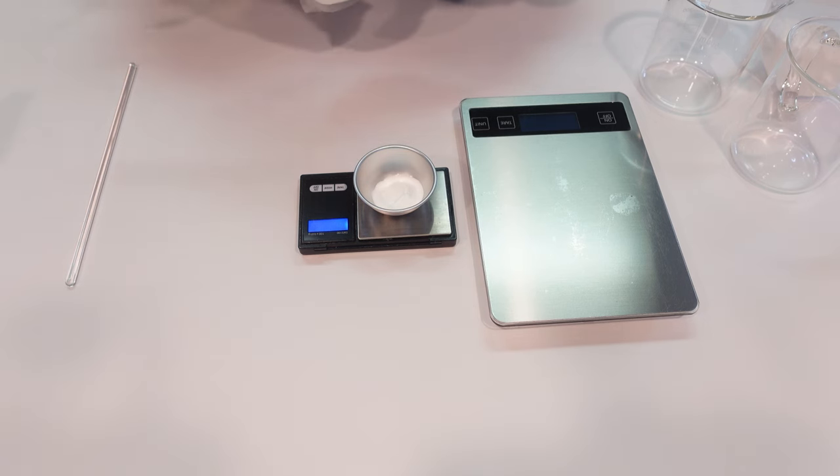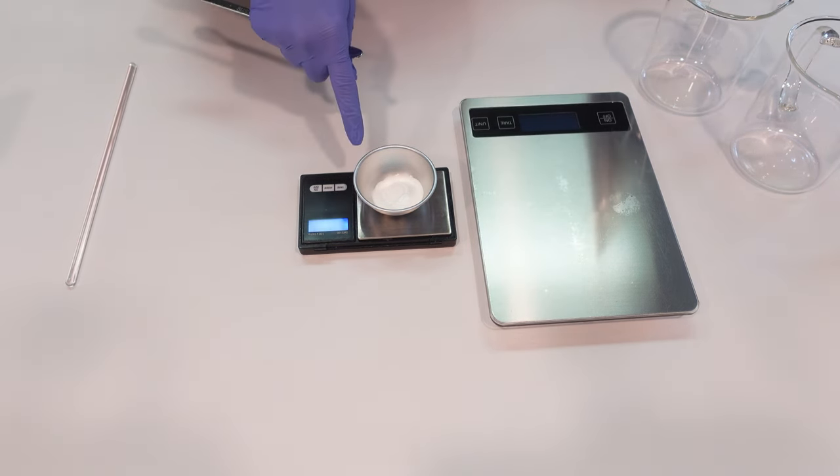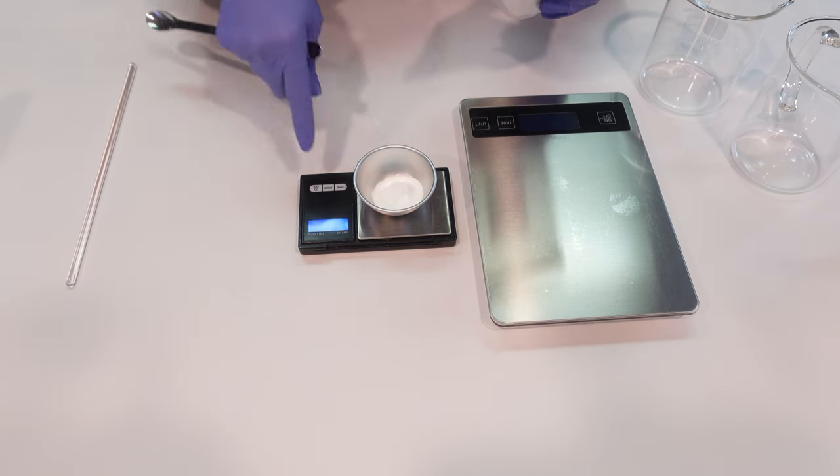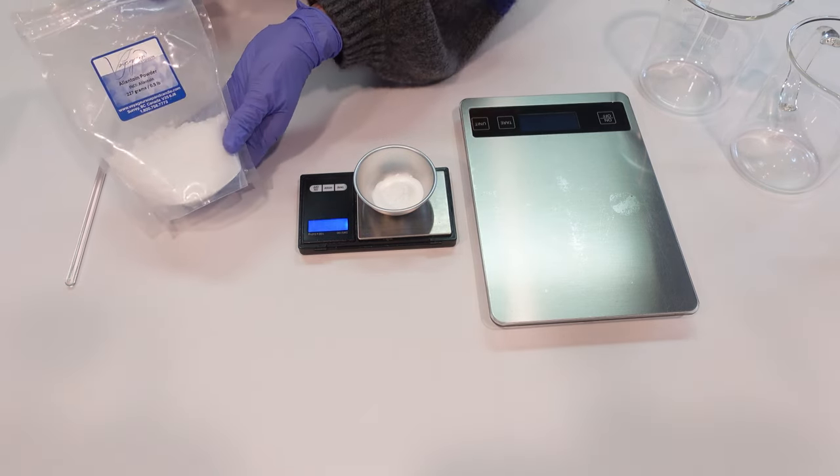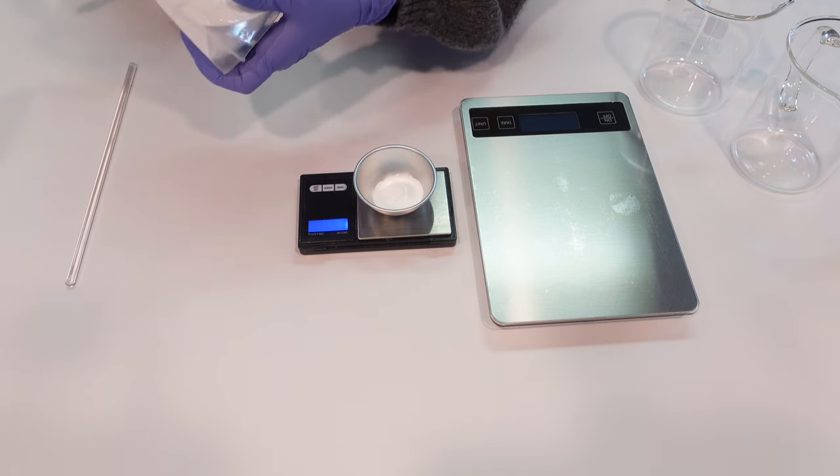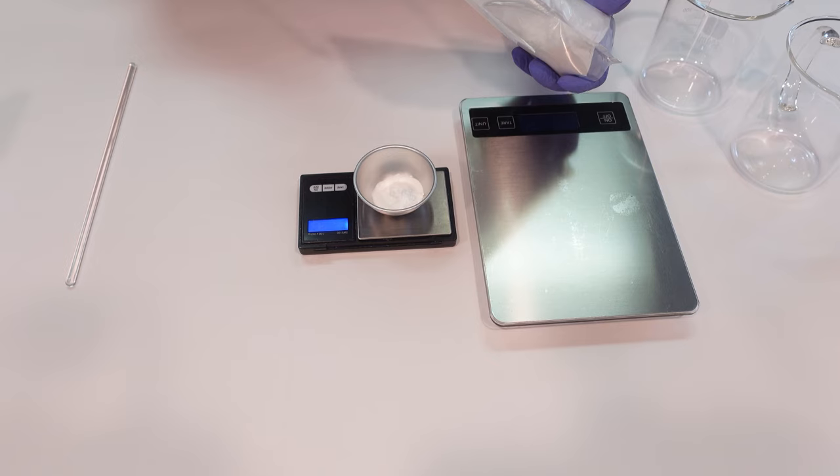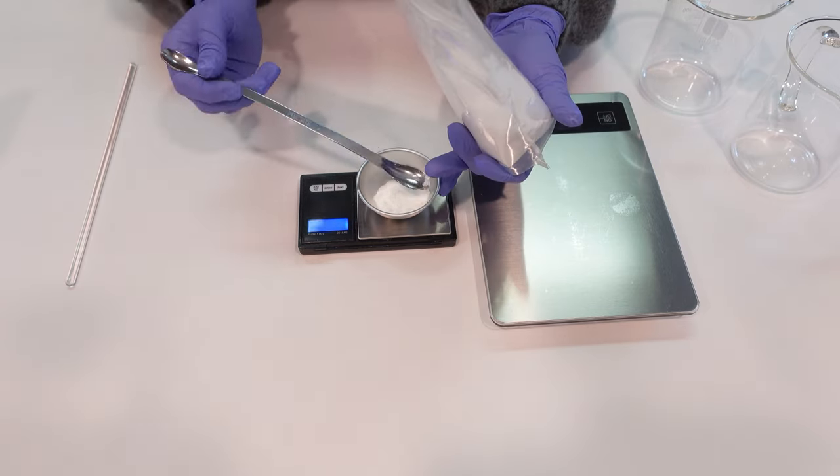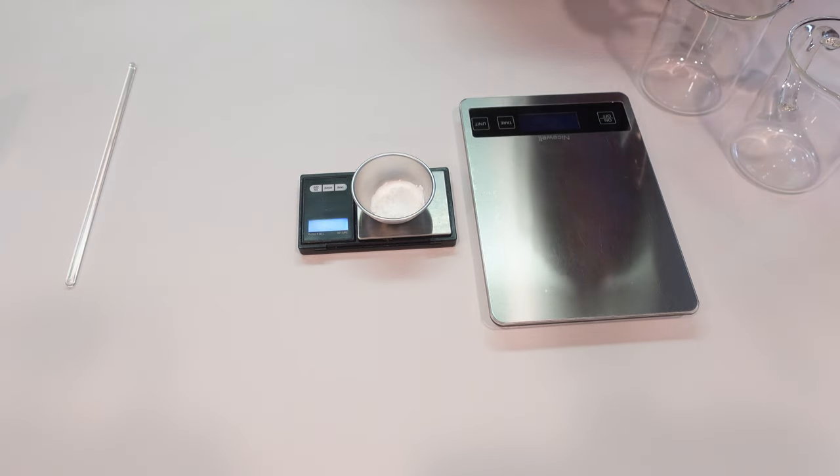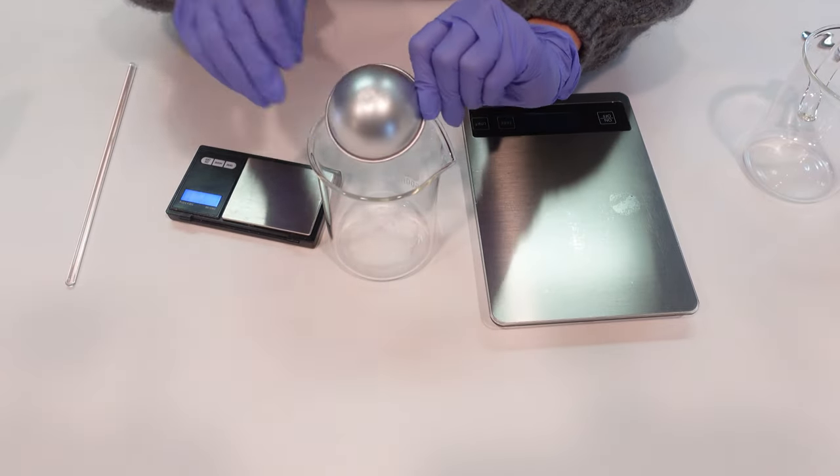Next we're going to be weighing off some allantoin. Allantoin is great for its soothing properties. Allantoin actually comes from the comfrey plant in this processed form, with lots of amazing benefits. We're going to go ahead and pop this allantoin powder and niacinamide powder into the bottom of this water phase beaker.